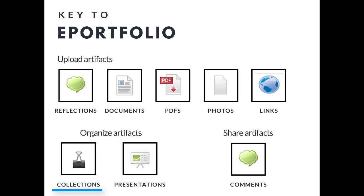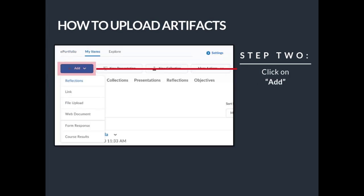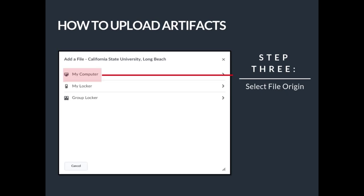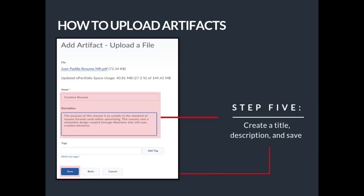To organize artifacts, you can create a collection or presentation. To share content, you can send it to other BeachBoard users who have the option to comment. The first step to upload artifacts is to click My Items from the home page. Step 2 is to click Add and choose what you want to be added from the drop-down menu — we are using File Upload for this example. In Step 3, you must choose the file location where your artifacts have been stored; for this example, we will choose My Computer. Once uploaded, click Add. Finally, you will create a title, description, and save your artifact.